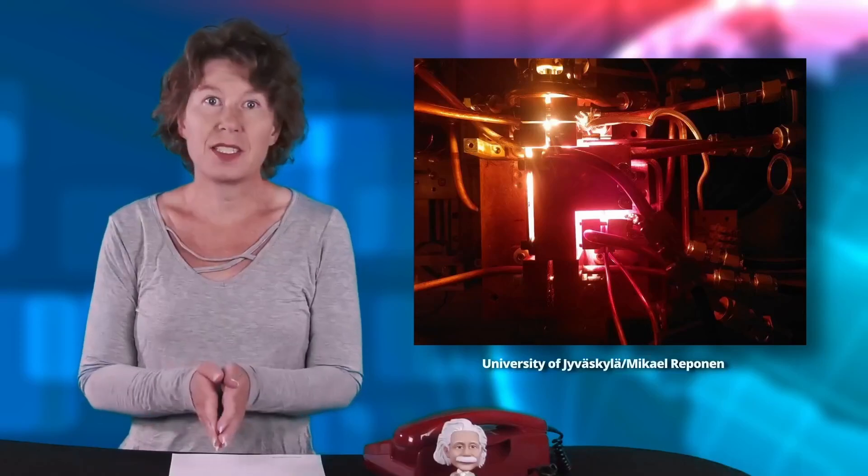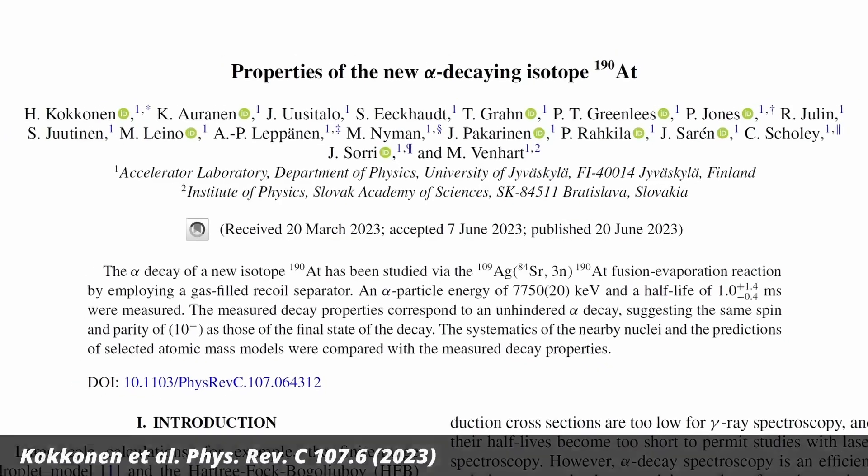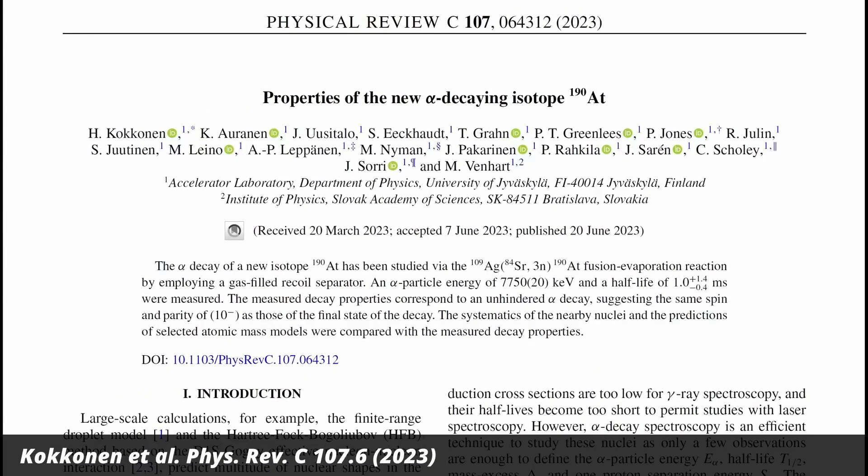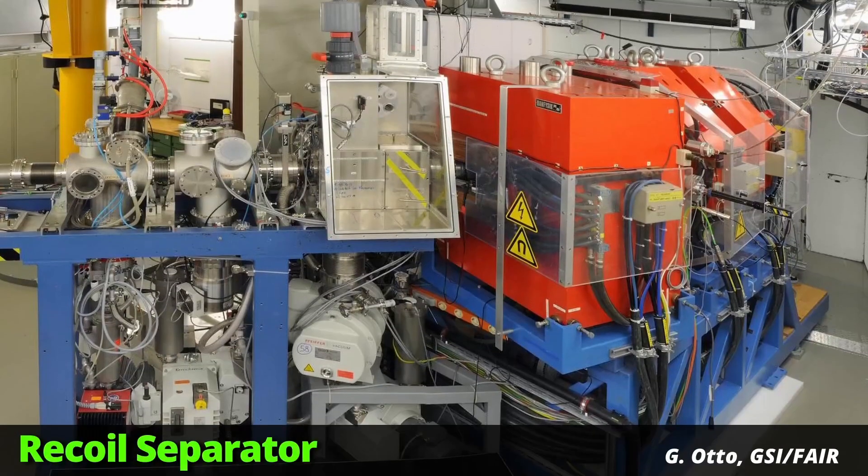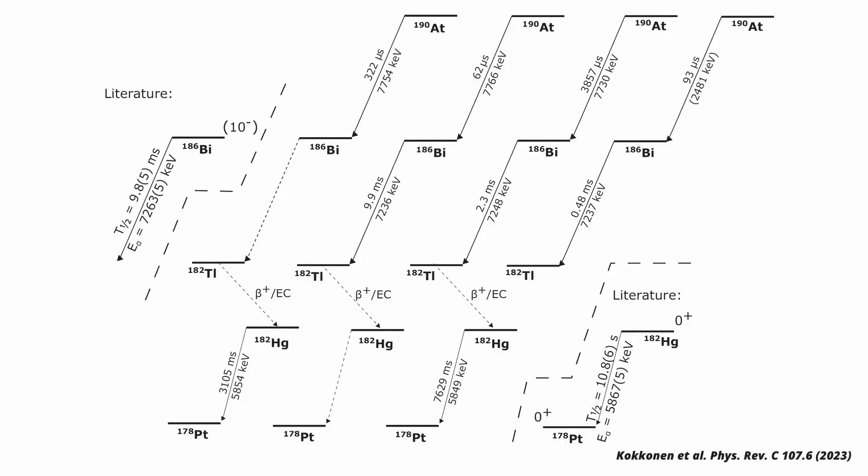That said, this stuff isn't all that difficult to produce. You just need to slam big nuclei into each other at sufficiently high speed, and every once in a while you'll produce some astatine and can investigate it. This is what they did for the new paper. They fired a beam of strontium particles on a silver target and then used a recoil separator to sort the decay products. They found clear evidence of decay chains that require the production of astatine-190, which had never been seen before. Quite a discovery for a master's thesis. The new isotope has a half-life of about a millisecond, after which it quickly decays into radioactive remains.